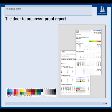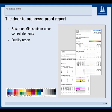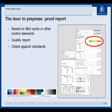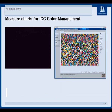Prepress can also use Prenect image control. They can generate a proof report — measuring the proof with mini spots or any other control elements, generating their quality report, and comparing measured values against standards to see immediately if they are within the standard.